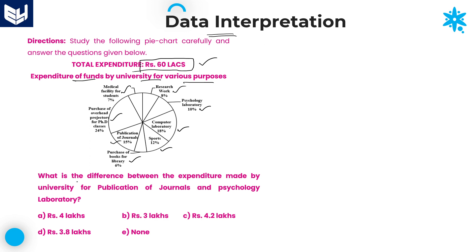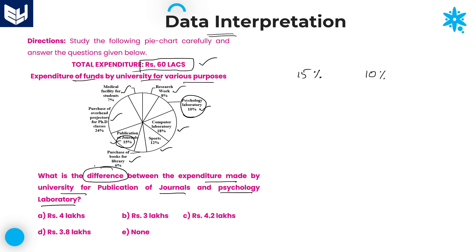Look at the first question: what is the difference between the expenditure made by the university for publication of journals and psychology laboratory? Publication of journals is 15% and psychology laboratory is 10%. The difference is 15% minus 10%, which is 5%.